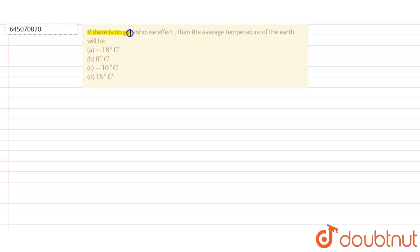If there is no greenhouse effect, then the average temperature of earth will be... So basically in the question they are saying if there is no greenhouse effect, then what will be the average temperature of earth?